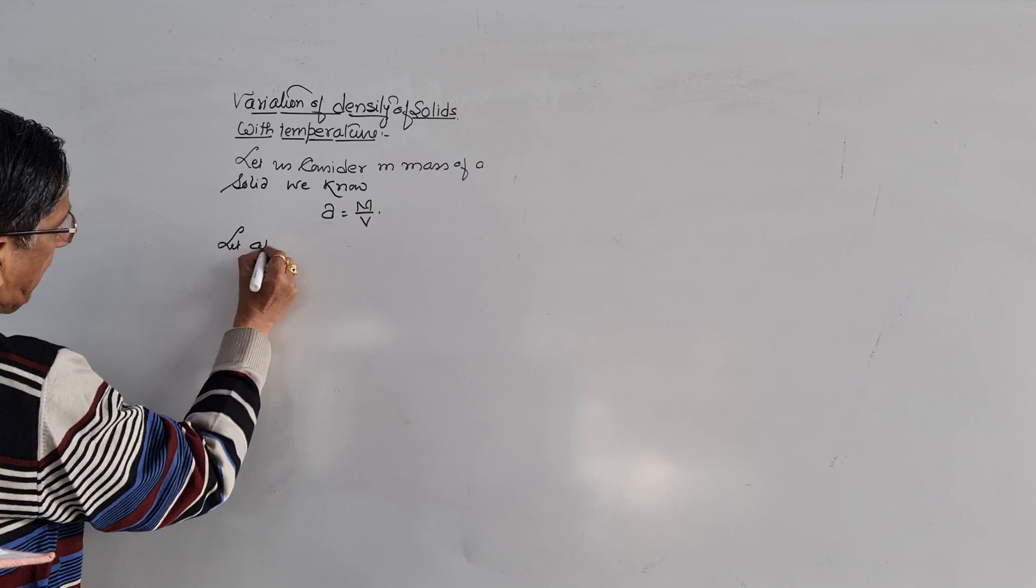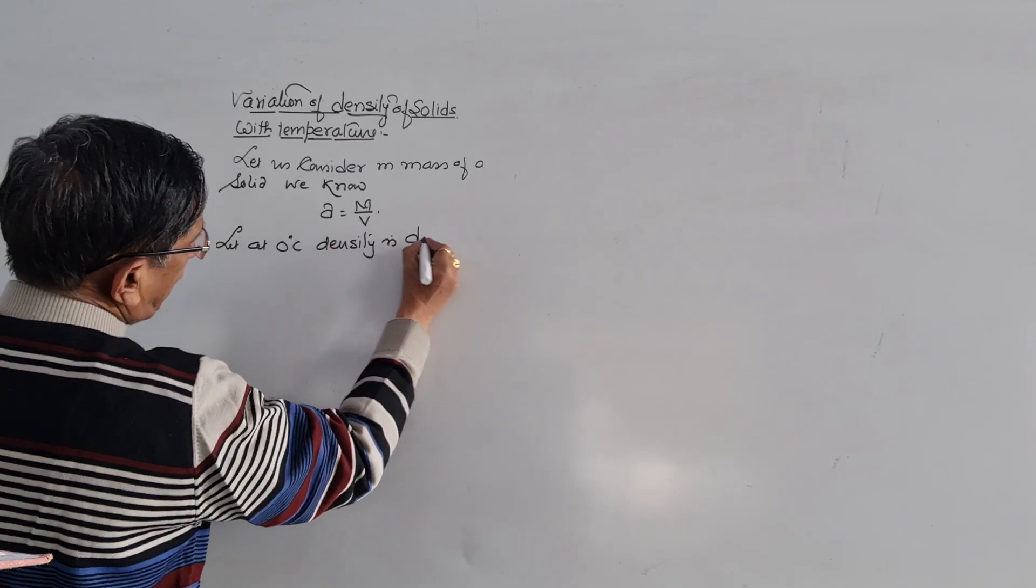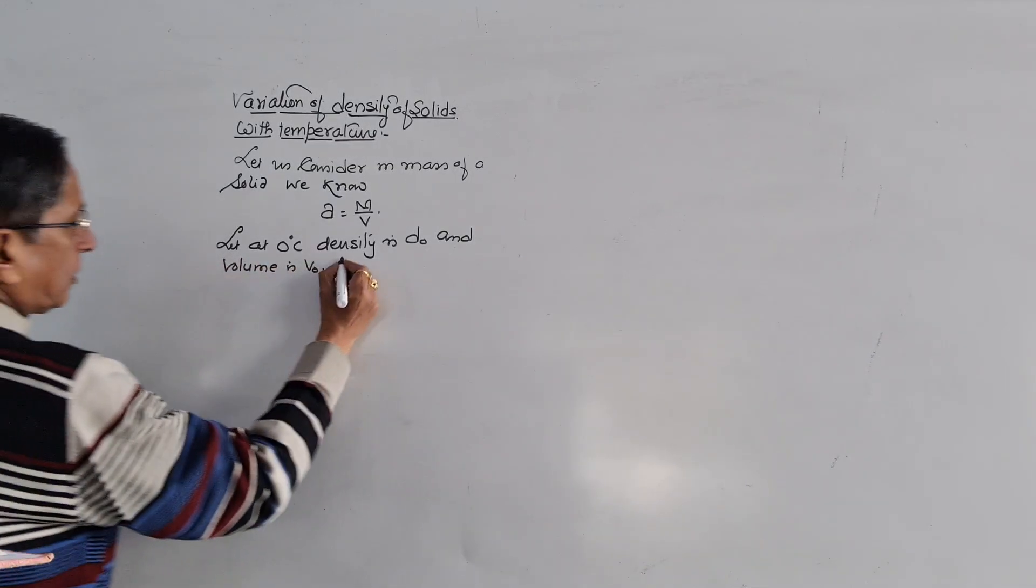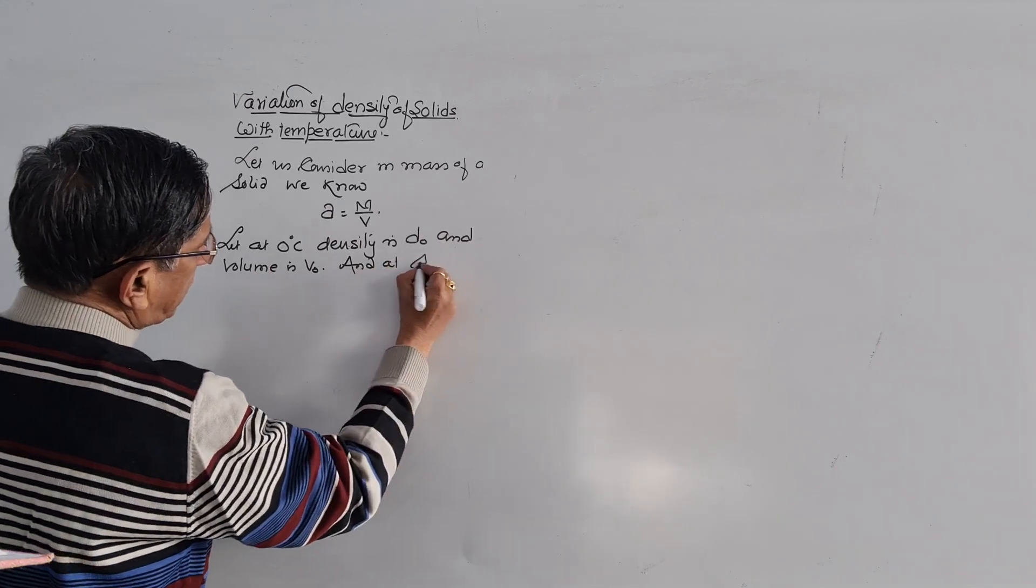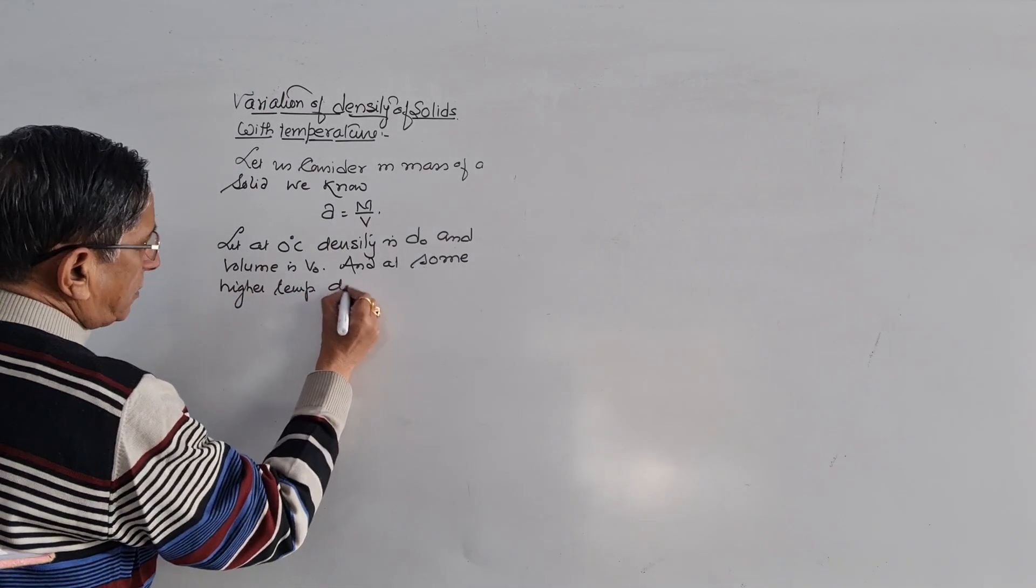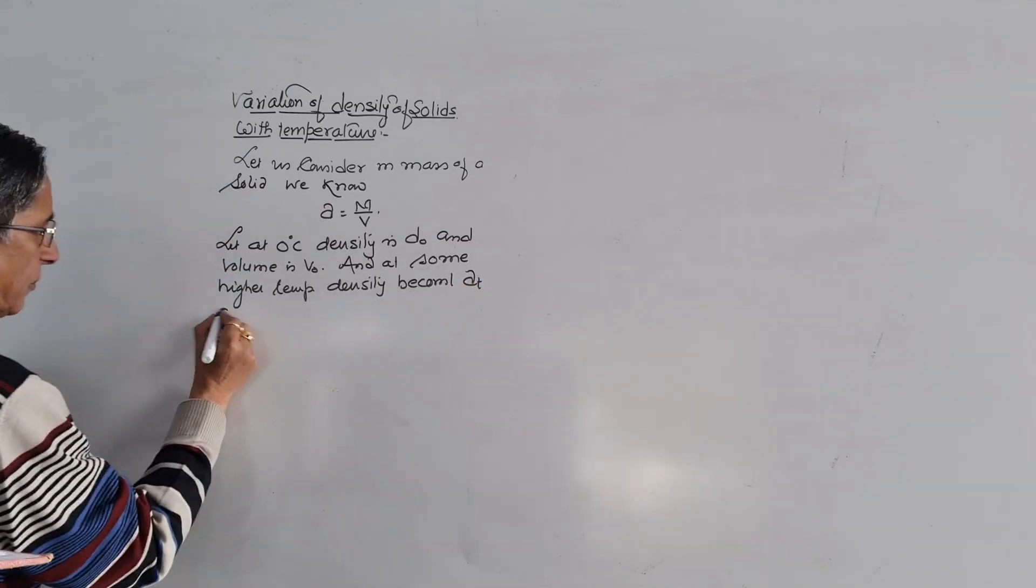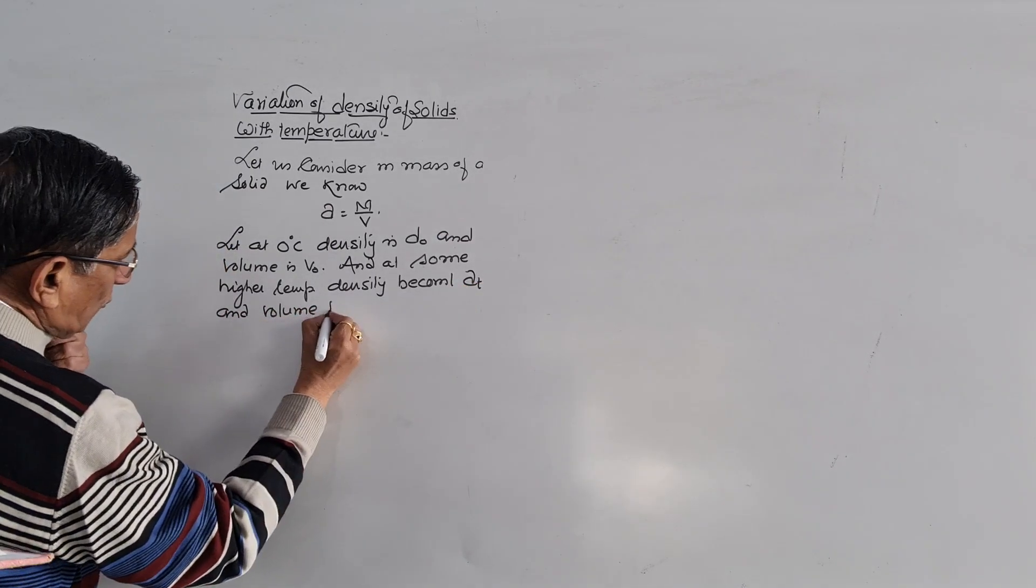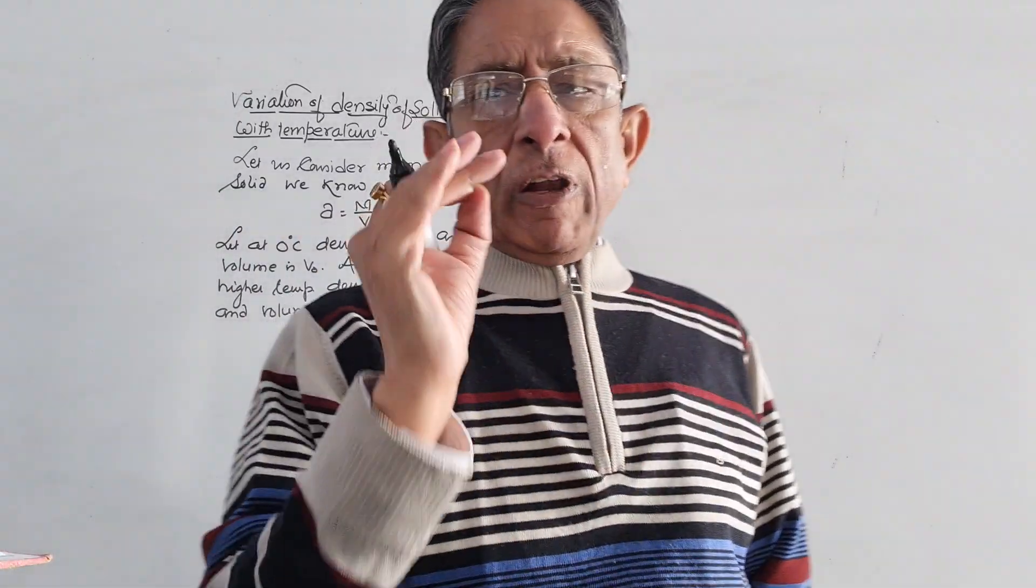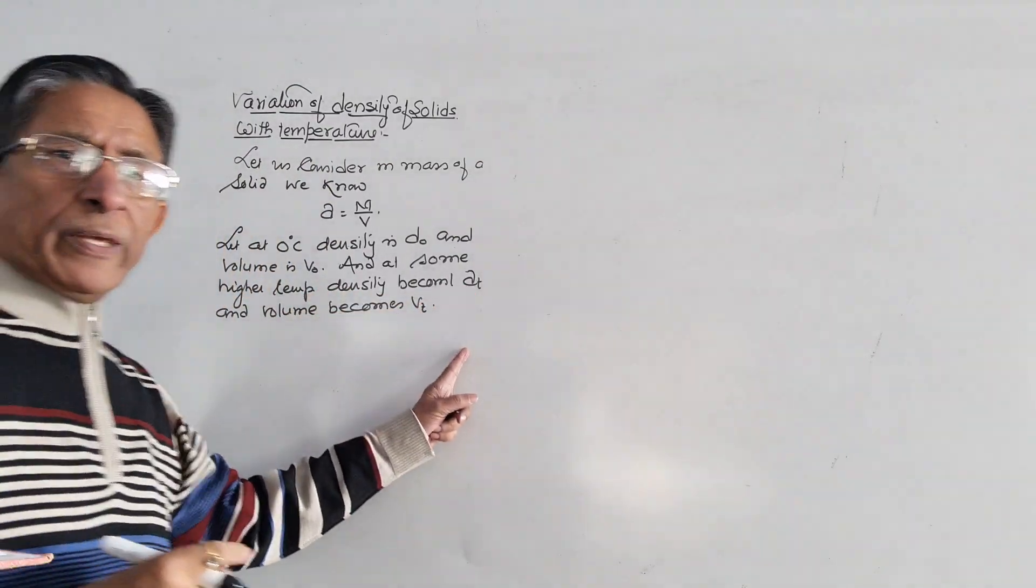So, let at 0 degree Celsius, density is D0 and volume is V0. And at some higher temperature, density becomes Dt and volume becomes Vt. But at 0 degree Celsius, what density was D0? Volume was V0. We have done T. So, what density was Dt and what volume was Vt?